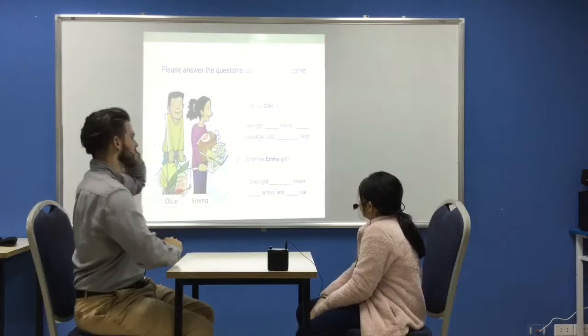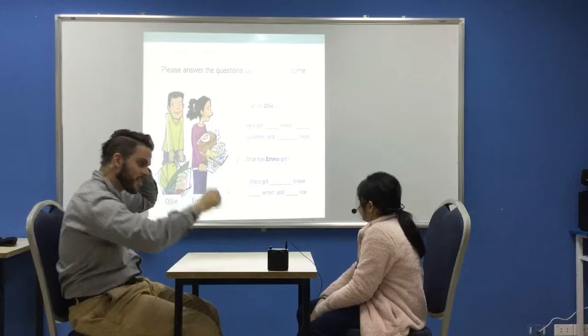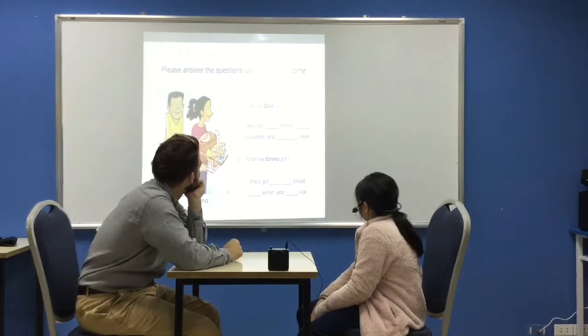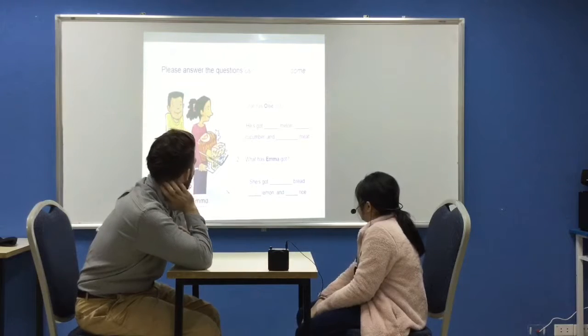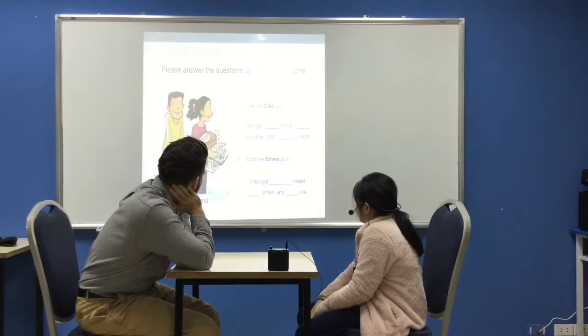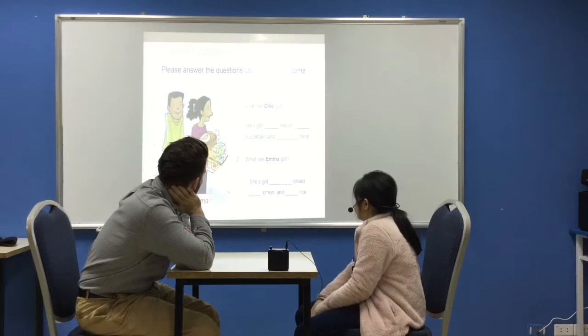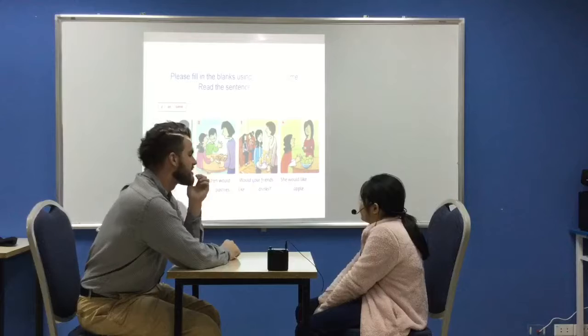Alright. Can you finish this sentence here? Number one about Ollie? Yeah. He's got a melon, a cucumber, and some meat. Well done. Okay. Number two about Emma. She's got some bread, a lemon, and some rice. Good. Okay. So, you can finish these last three sentences here. Okay.